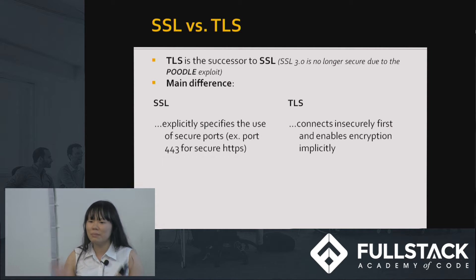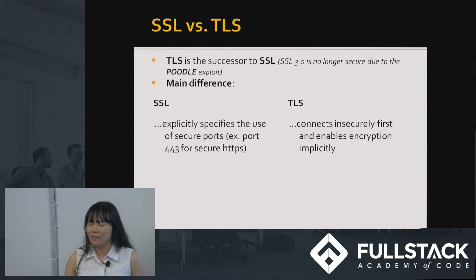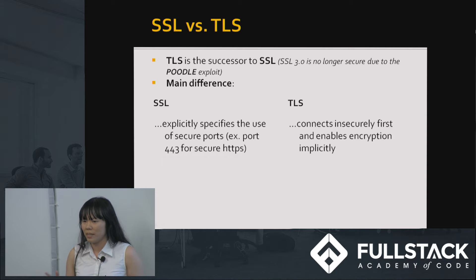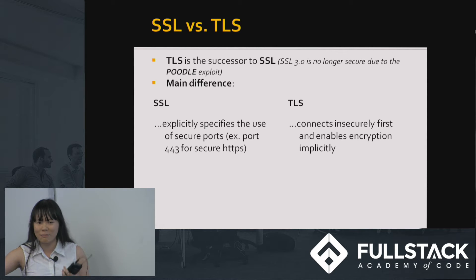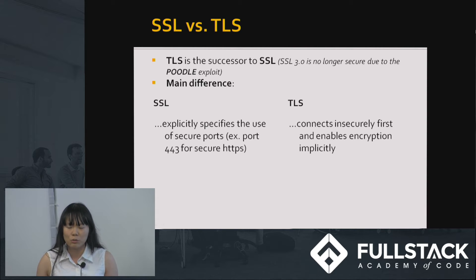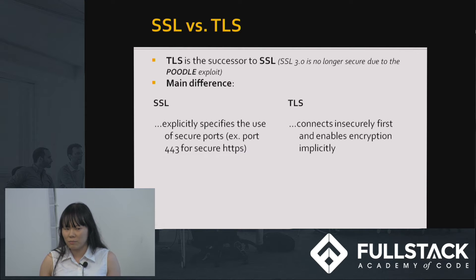SSL and TLS are extremely similar to each other, which is why I'm doing a presentation on both combined. They are still slightly different. TLS is technically the successor of SSL. SSL, as of 2017, is actually no longer secure because of an exploit called POODLE — and I'm not referencing the dog. The main difference is that SSL will explicitly specify a specific port that's secure to use, like 443, and TLS will not. TLS will connect insecurely at first and then implicitly initiate the handshake for a secure connection.